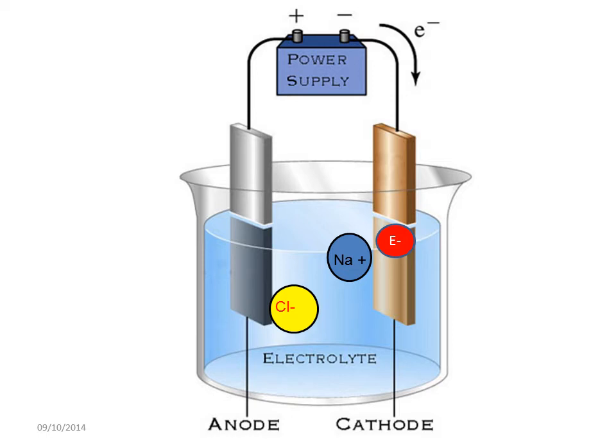At the negative electrode, electrons are donated to the positive ion to make an atom.